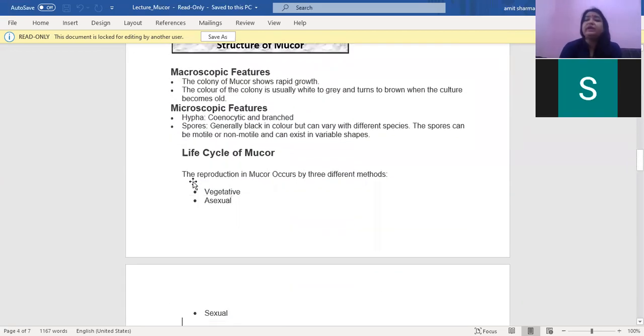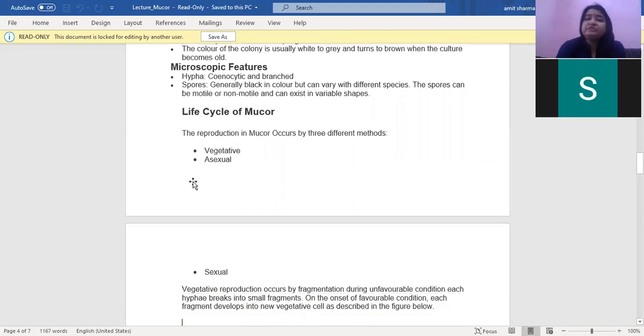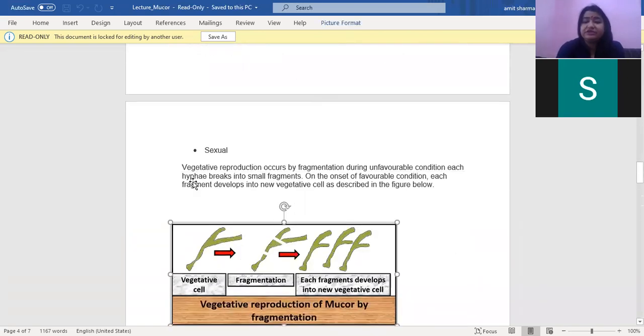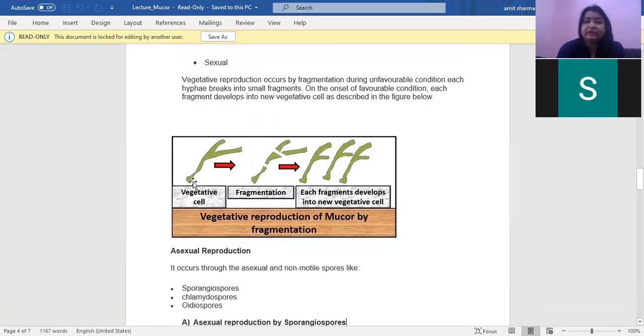MUCR shows both macroscopic as well as microscopic features. Macroscopic features like we are able to see the colony with the naked eye, and microscopic features include the coenocytic and branched hyphae, spores usually black in color. MUCR reproduces by all three methods: the vegetative method, the asexual method, and the sexual method.